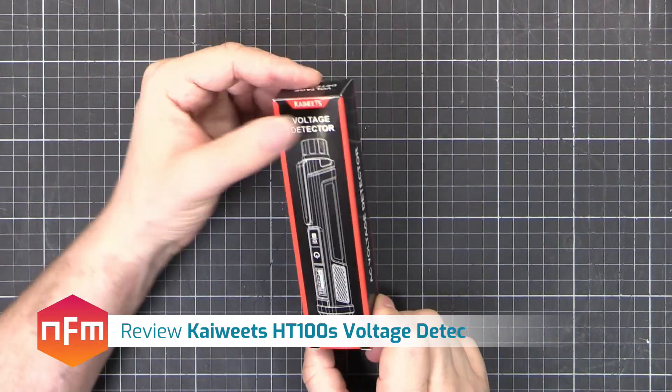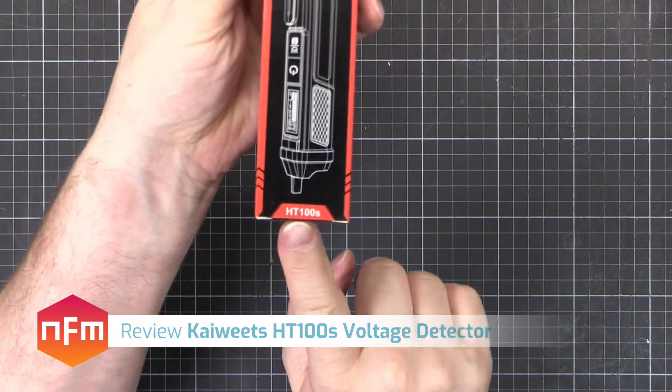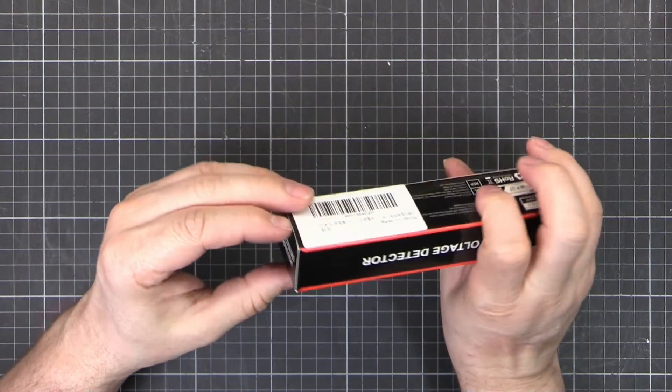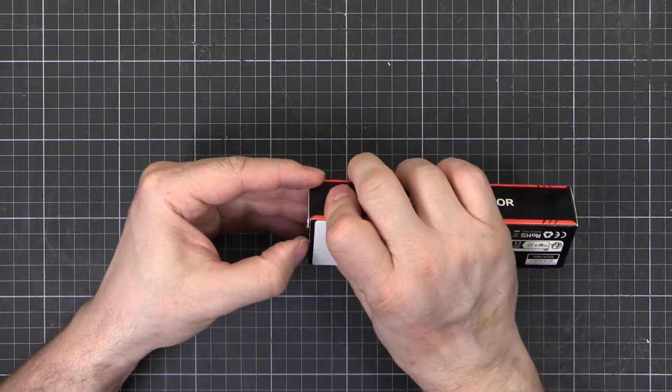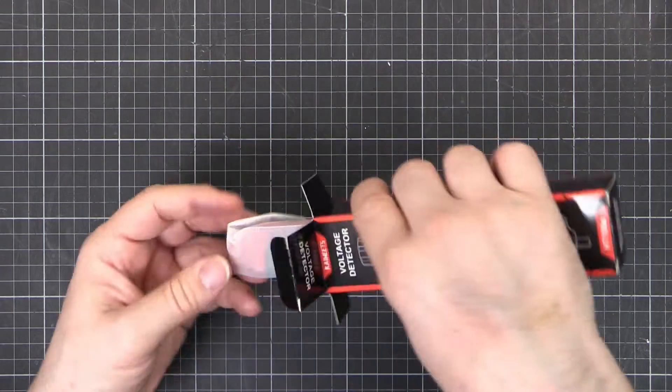Hey, time to have a look at another piece of Kay Wheats gear. This one's a voltage detector, part number HT100S. This is a non-contact voltage detector. You just hold it near your wire and you'll see if there's voltage there or not.